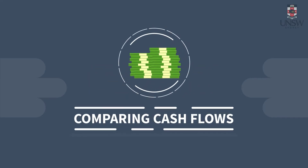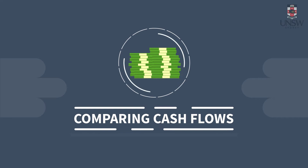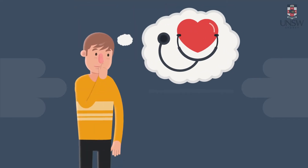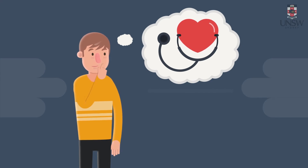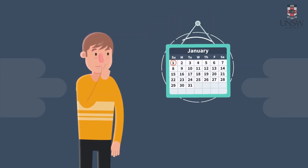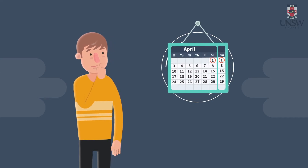Often, one wants to compare cash flows or sets of cash flows. You may be doing this without even realizing it. For instance, Anthony should decide whether he wants to pay his private health premium monthly, quarterly or annually.